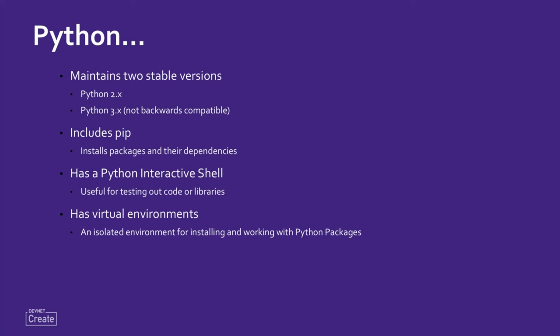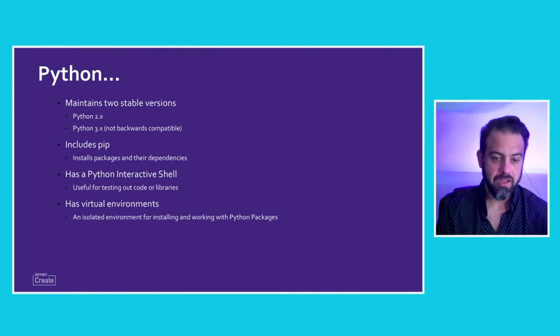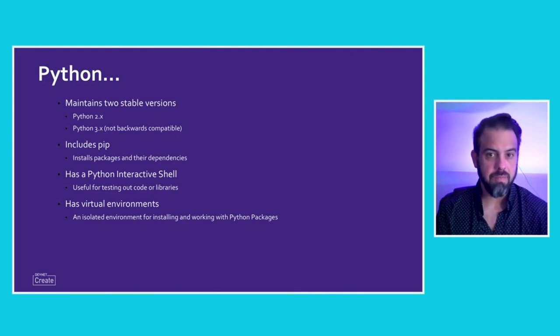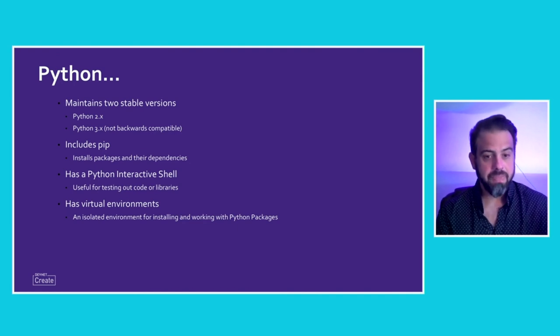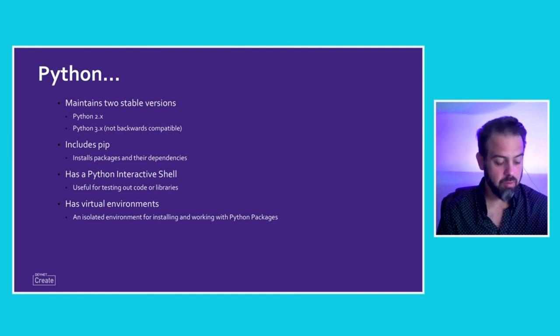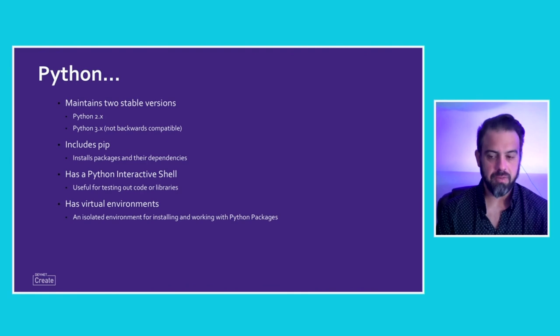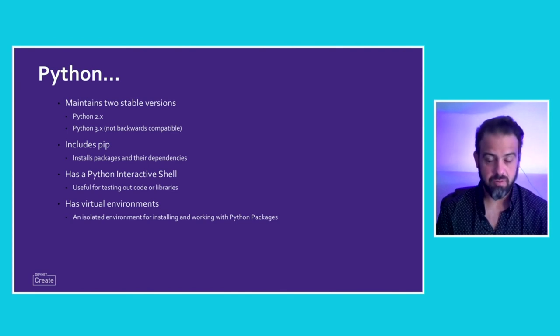Python has an interactive shell, useful for testing code or libraries. You can kick it off by typing Python or Python 3 in the terminal and write code within it — it's like a command-line version of the language. You can also invoke the interactive shell while running scripts to walk through code and identify what's happening in a particular application. Python also has virtual environments, and DevNet recommends getting in the habit of using them almost all the time.